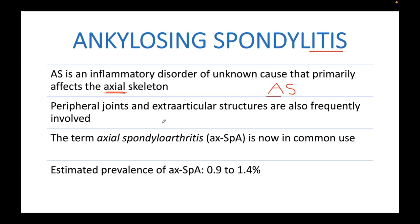AS is predominantly axial. There is a term used in Harrison's: AXSPA, which stands for axial spondyloarthritis. This is the term commonly used now. The estimated prevalence of AXSPA is about 0.9 to 1.4%, though memorizing that exact number is not required.